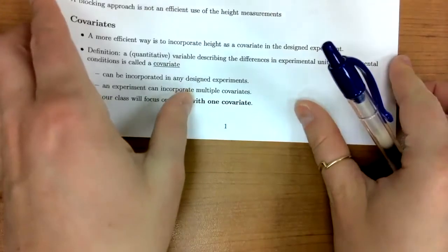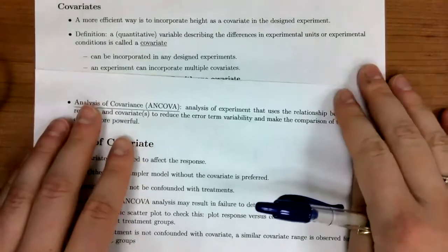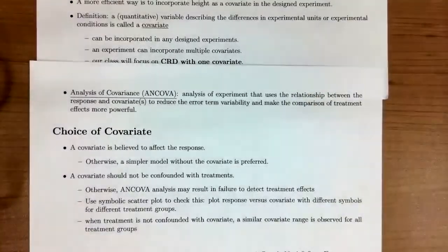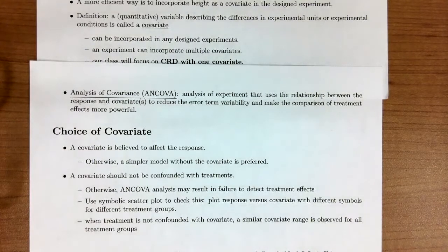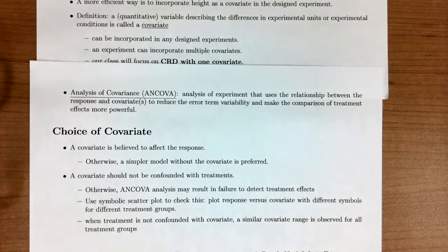When we do this, we're going to be using an analysis called an ANCOVA, or analysis of covariance. This is an analysis of an experiment that uses the relationship between the response and covariates to reduce the error term variability and make comparisons between treatment effects more powerful. The idea is very similar to when we incorporated blocks in the randomized complete block design — we explain some systematic variability to better understand the treatment effect and reduce background noise.